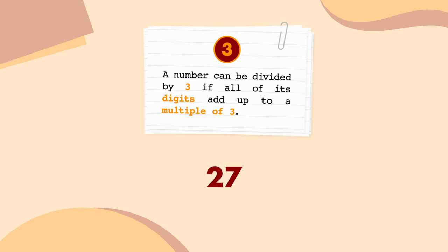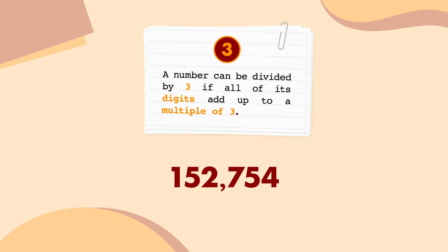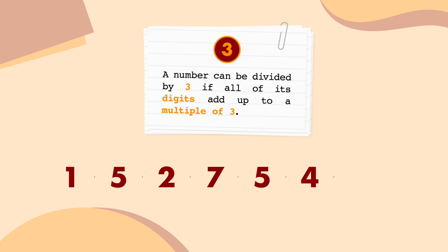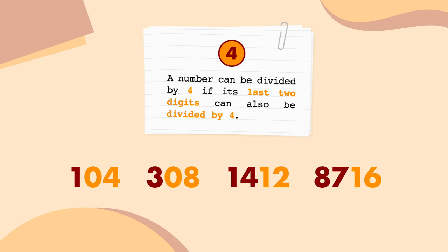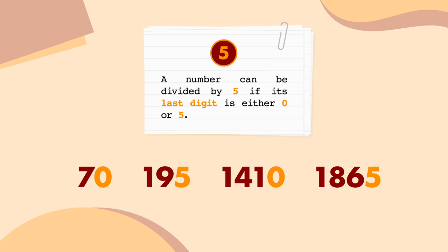For bigger numbers, you can keep going as long as you need. 152,754 can be divided by 3 because its digits add up to 24, and the digits in 24 add up to 6, which is a multiple of 3. A number can be divided by 4 if its last 2 digits can also be divided by 4, like 104, 308, 1412, and 8716. A number can be divided by 5 if its last digit is either 0 or 5, like 70, 195, 1410, and 1865.